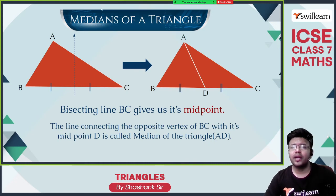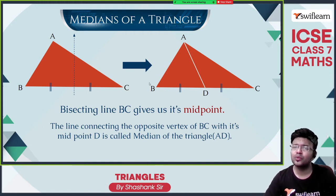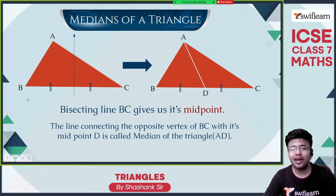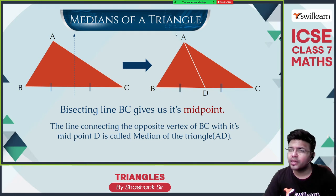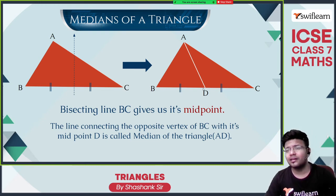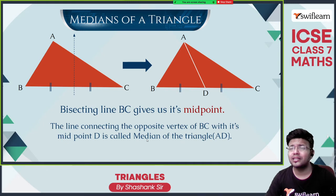Medians of a triangle. There is a triangle ABC. Now bisect the line BC — bisect means divide the line into two equal parts. Draw arcs more than half the length of BC from B, then with C as center draw two arcs again. Join them and we will get line BC bisected. Let the intersection point be D. The opposite vertex is A. Join the opposite vertex and the midpoint — you get a median. A median is a line segment joining the midpoint of one side of the triangle and the opposite vertex.